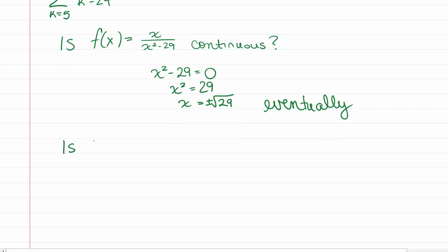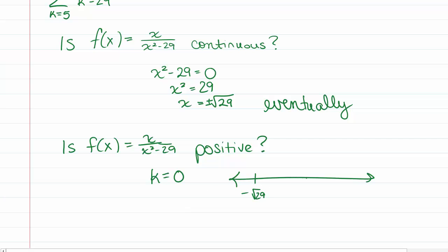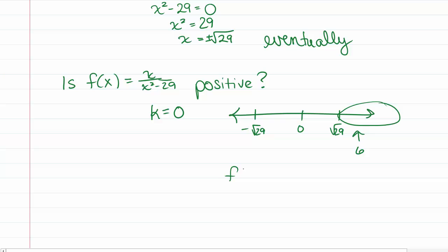The next question is: is f of x equals x over x squared minus 29 eventually positive? We know where it's discontinuous, and we also need to know where it equals zero — that's when the numerator equals zero, so when x equals zero. We have a number line with negative square root of 29, zero, and square root of 29. We really only care about the last interval. Picking x equals 6, since 6 squared is 36 which is bigger than 29, f of 6 equals 6 over 7, which is positive. So yes, it is eventually positive.